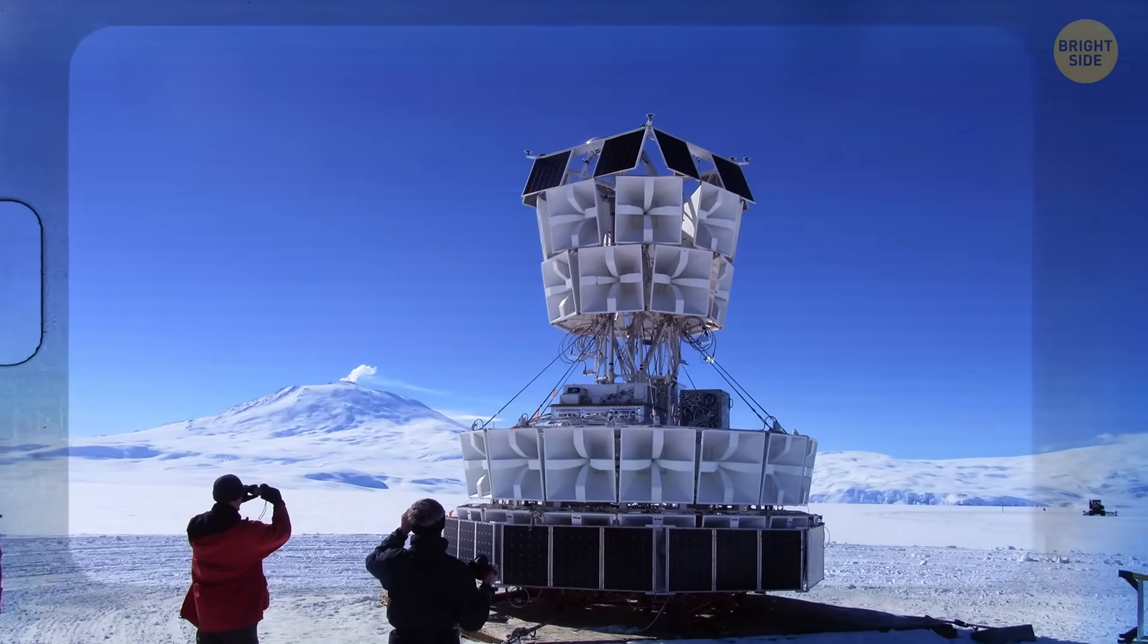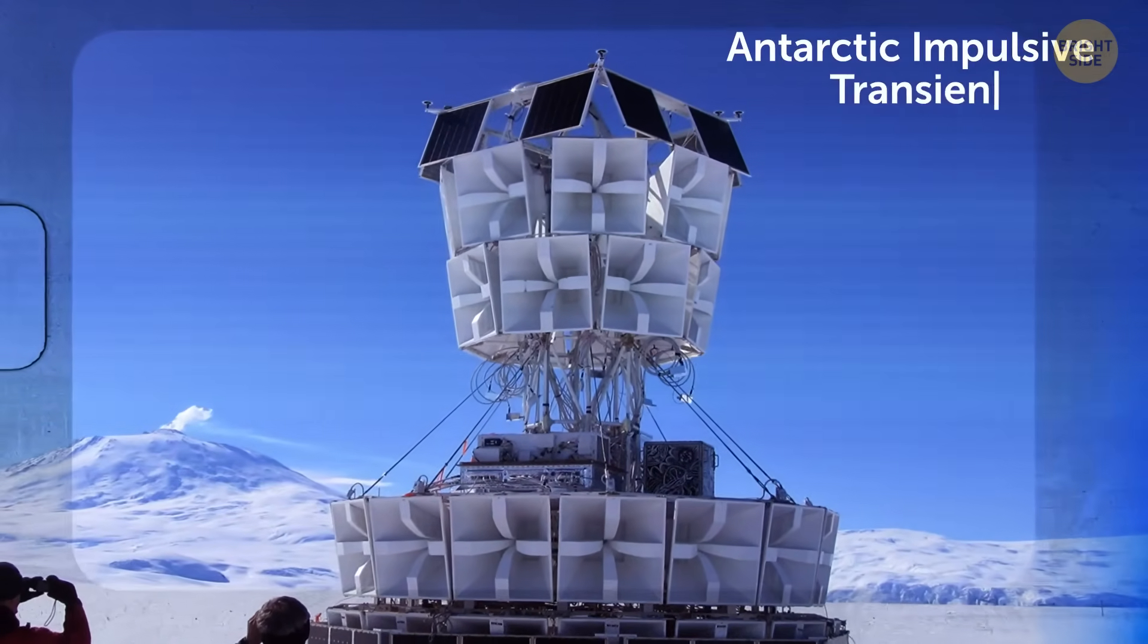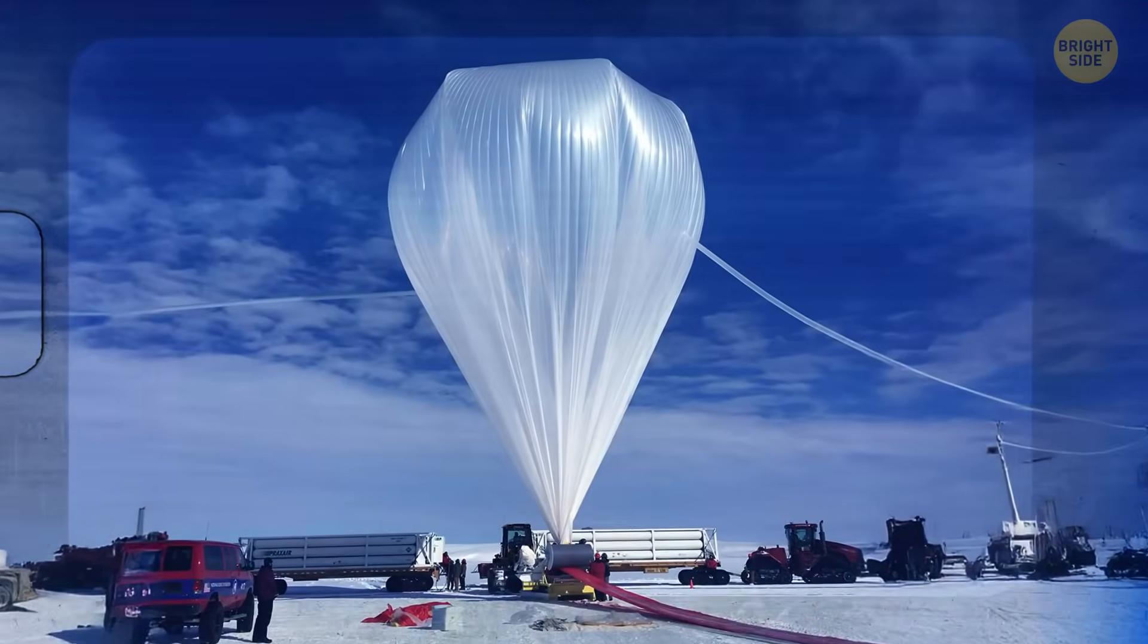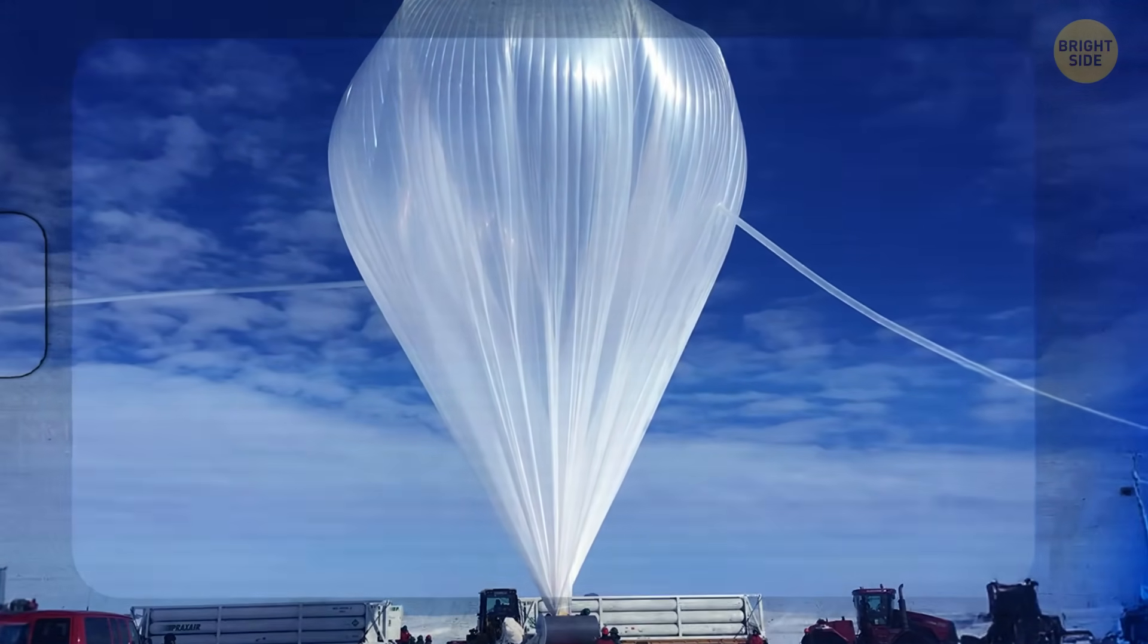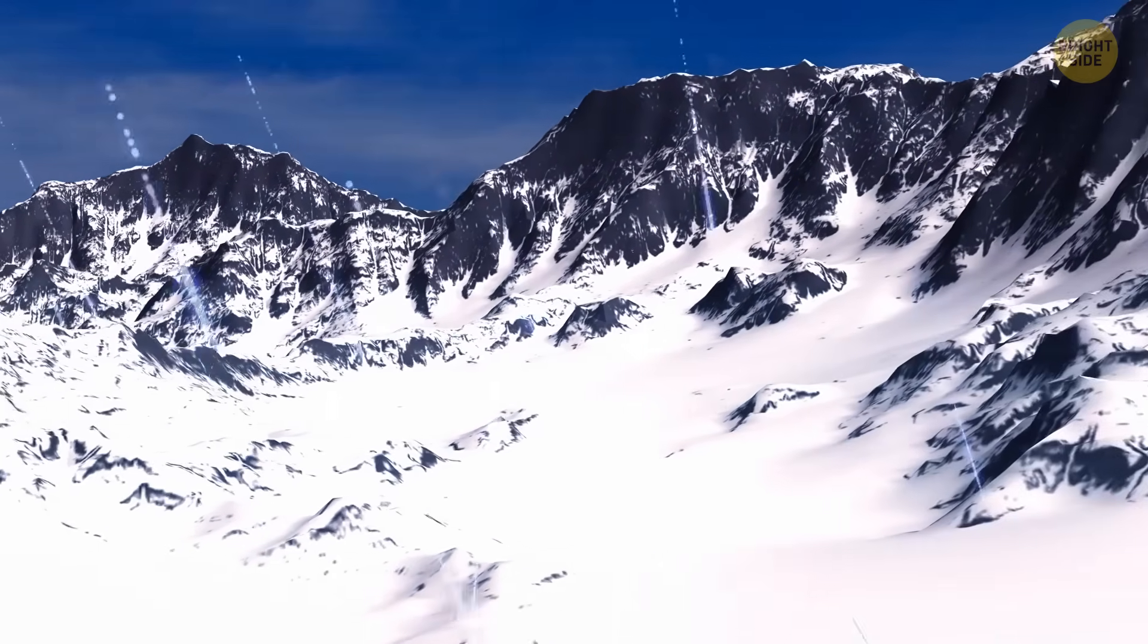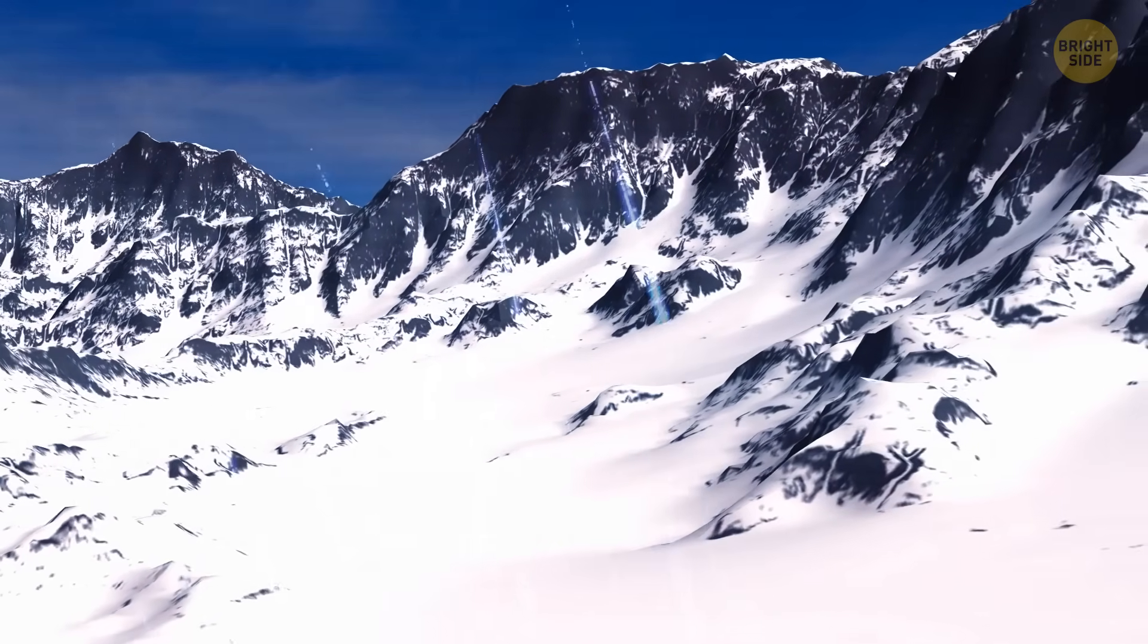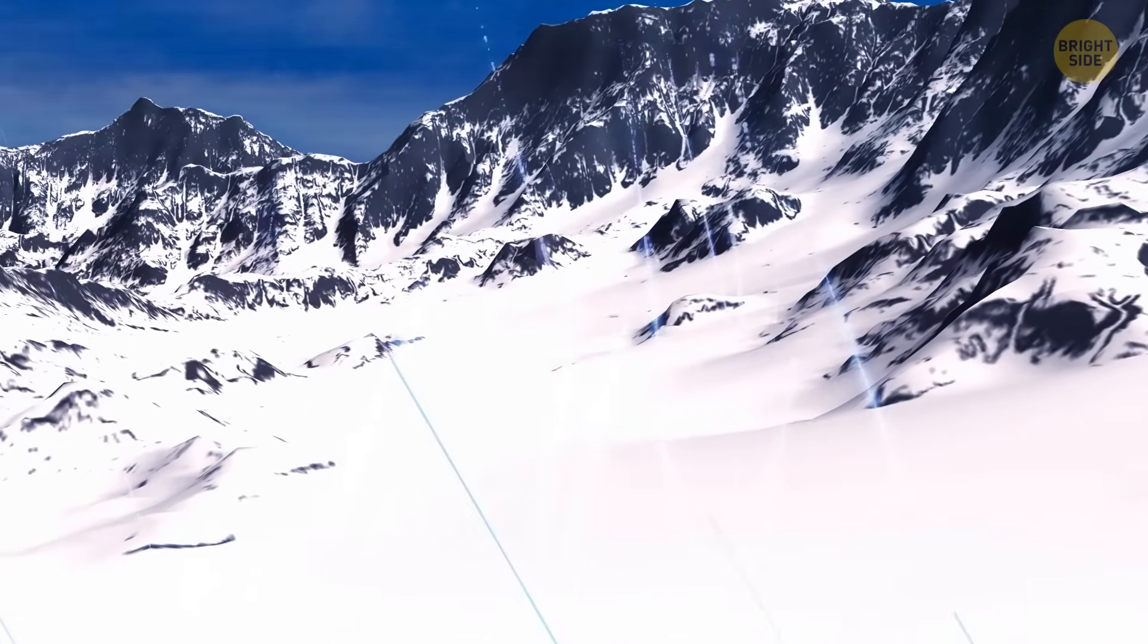You see, scientists are running an experiment called ANITA, short for Antarctica Impulsive Transient Antenna. Basically, it's a bunch of detectors strapped to giant balloons and floating way up above the South Pole. Their job is to detect extremely high-energy neutrinos.